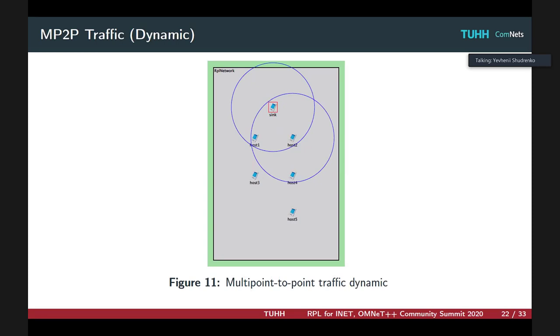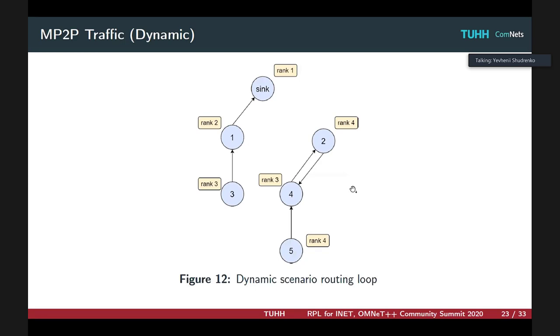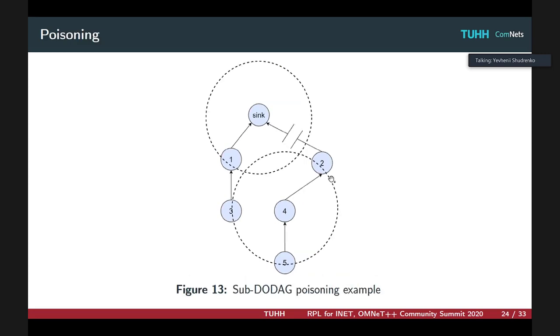Next scenario is the dynamic one where some mobility is introduced. Host 2 moves away from the sink's reachability and loses the connection to it, causing the following routing loop. Essentially, host 2 clears its DODAG or RPL state and rejoins node 4, creating this kind of loop which can be resolved using the poisoning functionality or poisoning mechanism as follows.